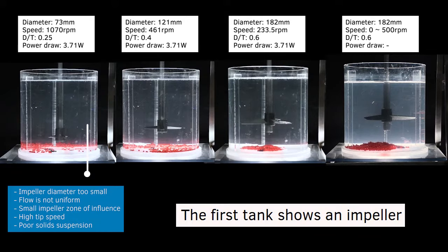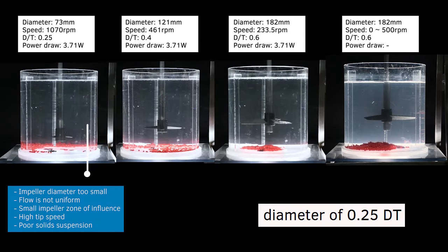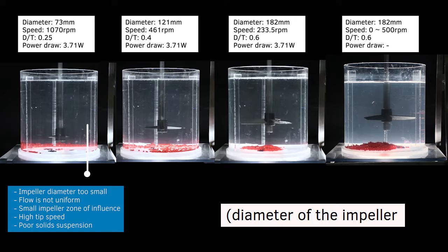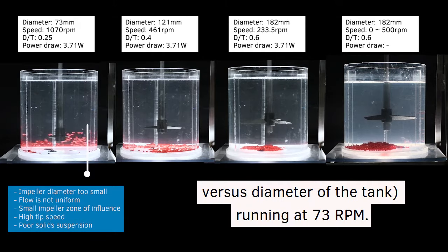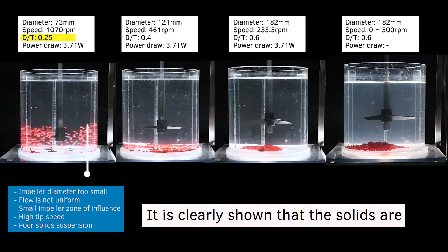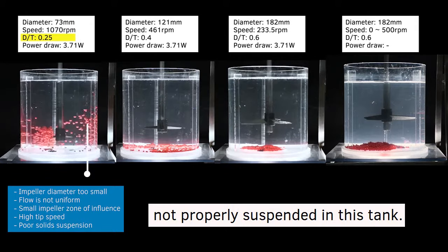The first tank shows an impeller diameter of 0.25 dt, diameter of the impeller versus diameter of the tank, running at 73 rpm. It is clearly shown that the solids are not properly suspended in this tank.